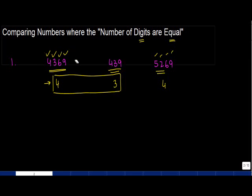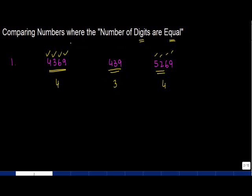But my problem aggravates because, or my problem increases because of the fact that in this particular given case, both 4369 and 5269 have equal number of digits. So the number of digits are basically equal. In that case, how do you find out which is a bigger number?